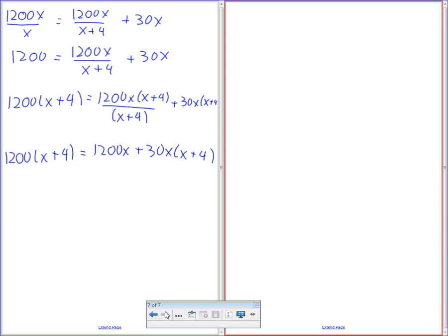What I did is I just cancelled out all the denominators. Now I'm going to distribute everything here. So that's going to be 1200x plus 4,800 equals 1200x plus 30x squared plus 120x.